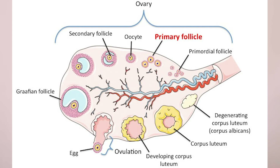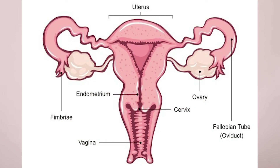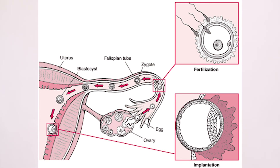That dominant follicle, at this time during ovulation — which is about the middle of your cycle — releases the egg from within the ovary. This is what ovulation is. That egg goes into the fallopian tube, and this is where we want fertilization to happen. Fertilization is when sperm — a cell inside your partner's semen — meets the egg in the fallopian tube. If the egg does not get fertilized, it will only survive for 12 to 24 hours before it starts to disintegrate.